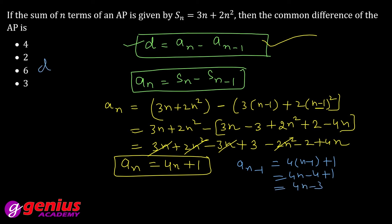D is equal to an, which is 4n plus 1, minus an minus 1, which is 4n minus 3. That means d equals 4n minus 4n plus 1 plus 3. 4n and minus 4n cancel, 1 plus 3 equals 4. So d, the common difference, is 4. Clear?